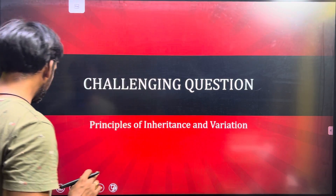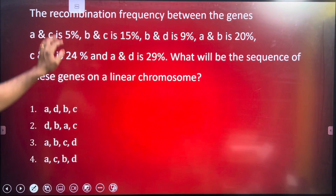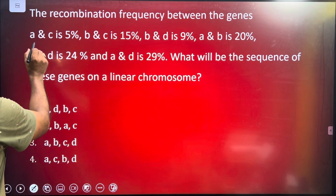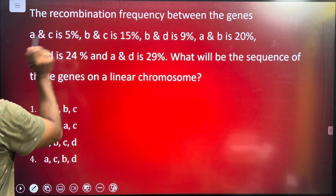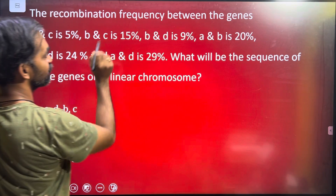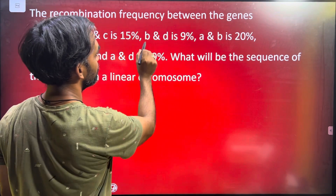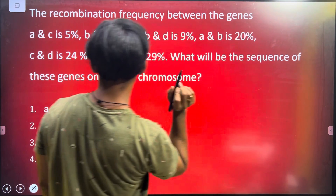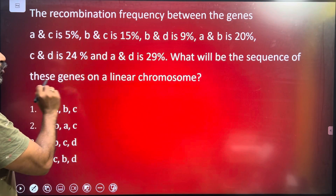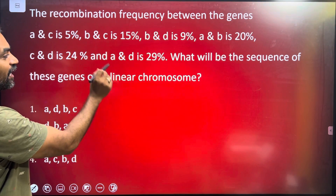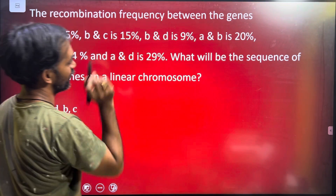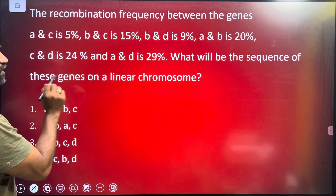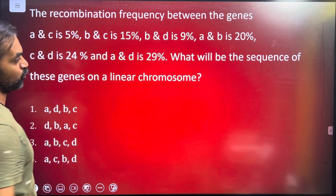One important question: the recombination frequency between genes A and C is 5%, B and C is 15%, B and D is 9%, A and B is 20%, C and D is 24%, and A and D is 29%. What will be the sequence of these genes on a linear chromosome?